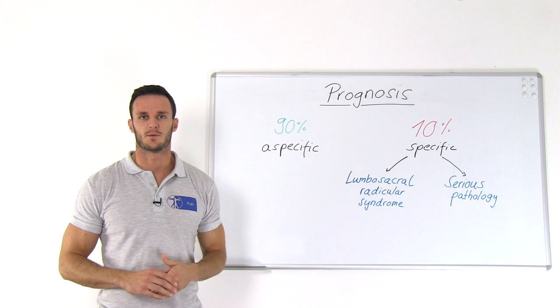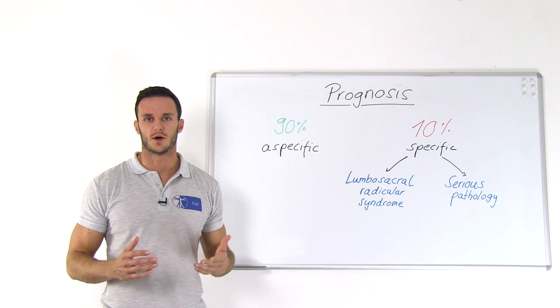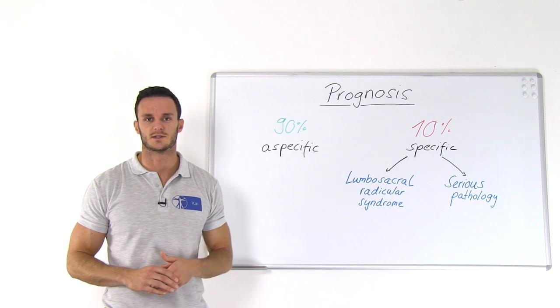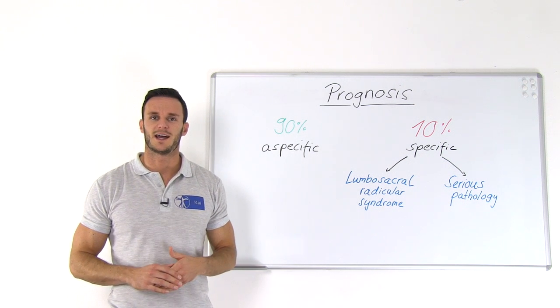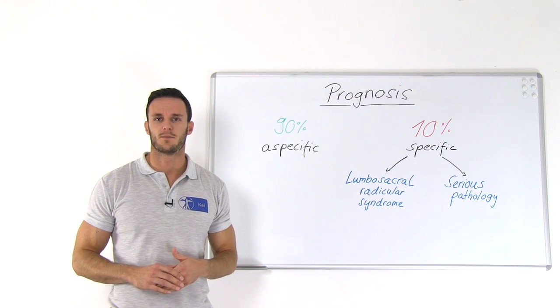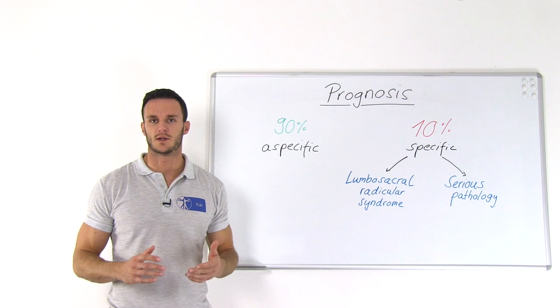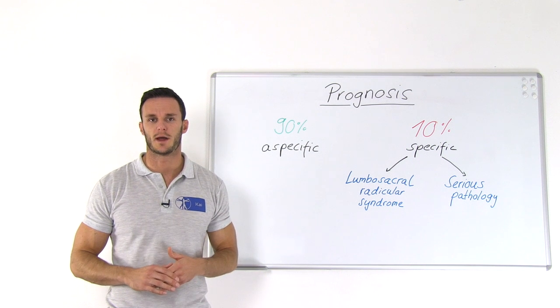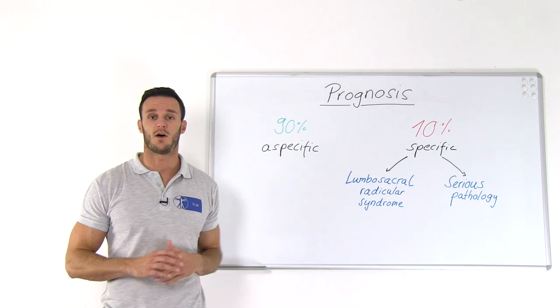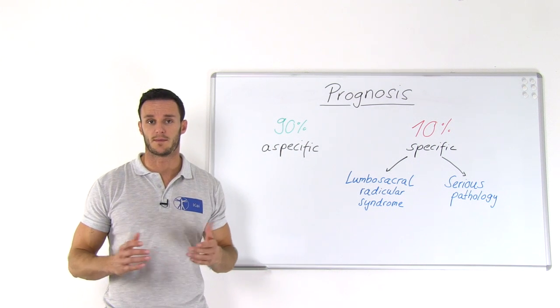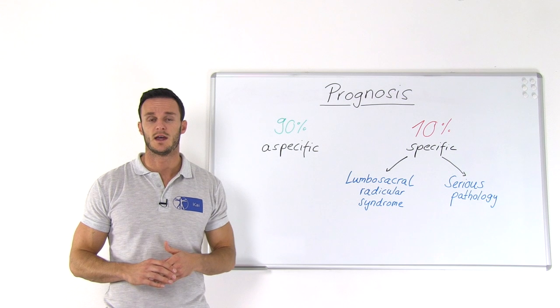Let's start with part one: prognosis and cause. This guideline is designed for patients with nonspecific low back pain, which is the case in 90% of all low back pain cases.